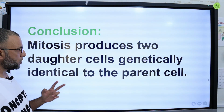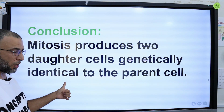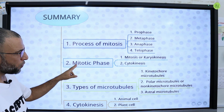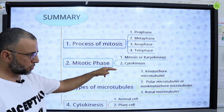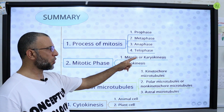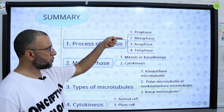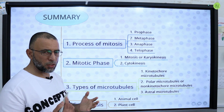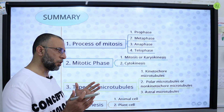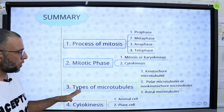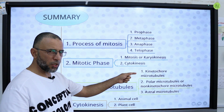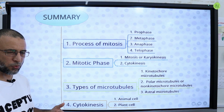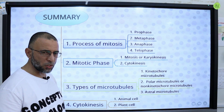Mitosis produces two daughter cells that are genetically identical to the parent cell. To summarize: the mitotic phase consists of mitosis and cytokinesis. Mitosis (karyokinesis) is the division of the nucleus and consists of prophase, metaphase, anaphase, and telophase. Cytokinesis is the division of the cytoplasm and differs between animal and plant cells. There are three types of microtubules: kinetochore microtubules (attached to chromosomes), polar microtubules or non-kinetochore microtubules (not attached to chromosomes), and astral microtubules.